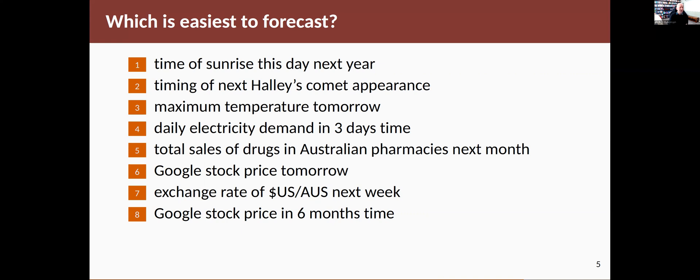Firstly, the time of sunrise this day next year, even though it's a long time away, is actually extremely easy to forecast. The timing of the next Halley's comet appearance is also very easy, so I'll put those two first. Next on the list I'd put forecasting the temperature tomorrow. The reason is that we have very good models of meteorology, of the way the weather unfolds, at least over short periods of time, up to a few days.